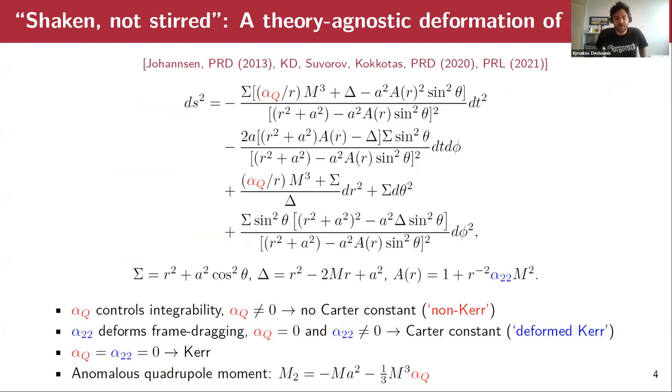Now let's take a look at this theory agnostic deformation of Kerr, which essentially has two deformation parameters, alpha-q and alpha-22. This is inspired by the work of Johannsen in 2013, and we have added an extra deformation alpha-q. Now, the alpha-22 deformation does nothing but changing the frame dragging, and we still have a Carter-like constant, therefore we'll be calling this a deformed Kerr. On the other hand, alpha-q explicitly breaks integrability and leads to chaotic phenomena, because there is no Carter constant, and we will call this a non-Kerr.